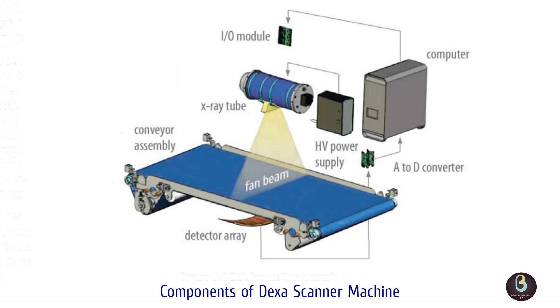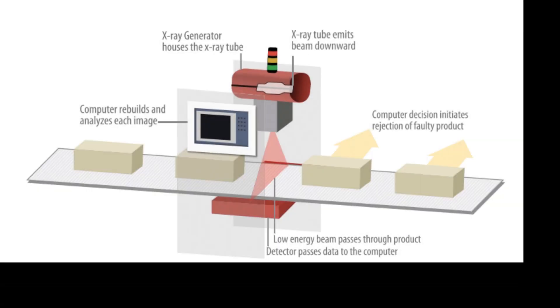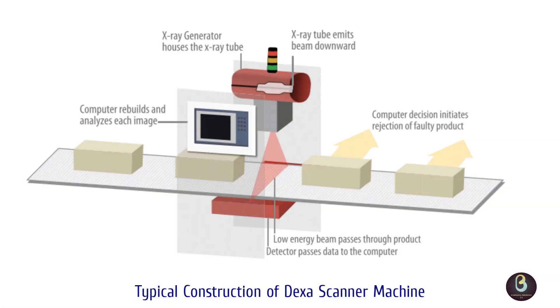The electrons are accelerated to the target by applying a high voltage between the anode and the cathode. When the electrons hit the tungsten target mounted inside the copper anode, they decelerate rapidly and this deceleration creates the X-ray emissions.